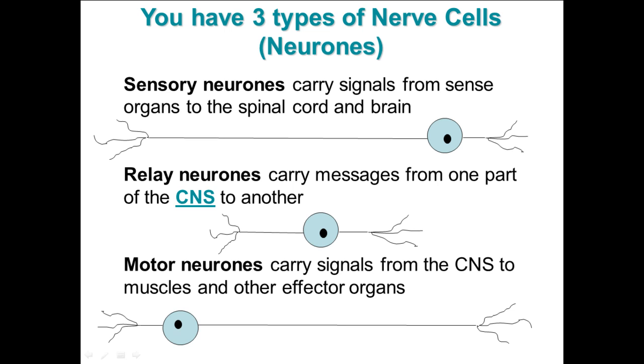The second is a relay neuron, which carries messages from one bit of your central nervous system to another. This is usually shown in diagrams on a spinal cord.